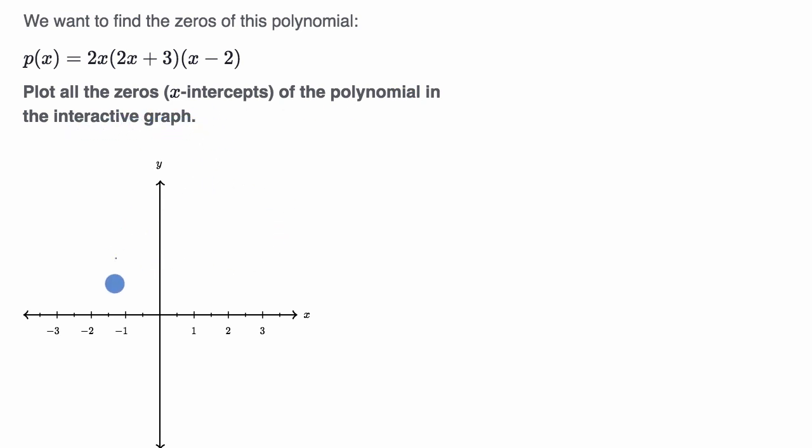And they say plot all the zeros, or the x-intercepts, of the polynomial in the interactive graph. This is a screenshot from Khan Academy. If you're doing it on Khan Academy, you would click where the zeros are to plot them, but I'm just going to draw it in. So pause this video and see if you can have a go at this before we work on this together.